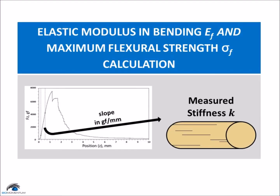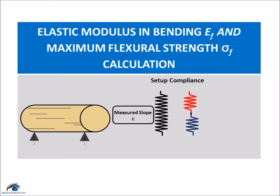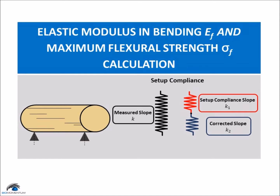The slope obtained from the analysis corresponds to the measured bending stiffness of the sample. The entire system can be modeled as two springs connected in series, where the top spring consists of the setup compliance and the bottom spring consists of the actual deformation in the sample. Therefore, the measured slope needs to be corrected to obtain accurate intrinsic mechanical properties resulting from the bending test.